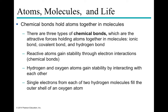Atoms seek stability: one with seven electrons in its outer shell wants to gain one; one with only one wants to give it up. In water, hydrogen wants one bond and oxygen wants two, so oxygen makes two single bonds — one to each hydrogen. Each hydrogen makes one single bond to oxygen, and oxygen makes two single bonds total.